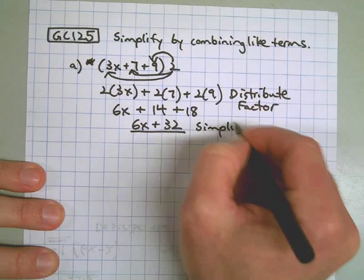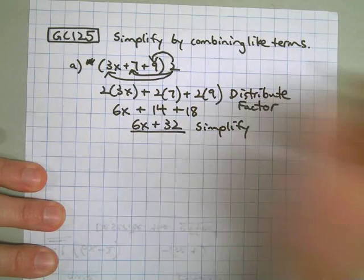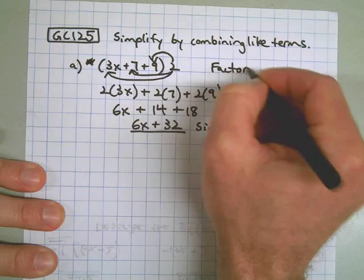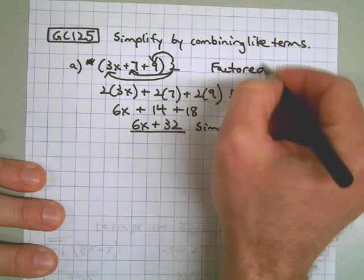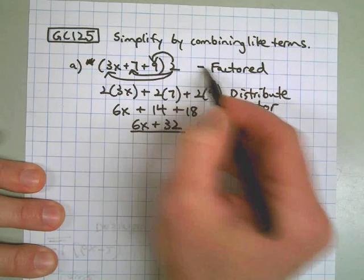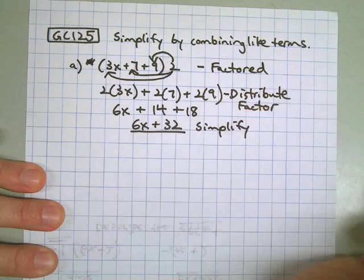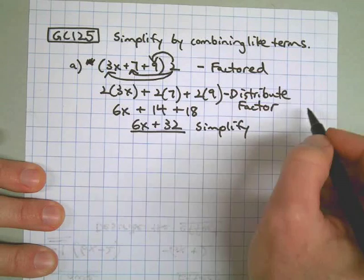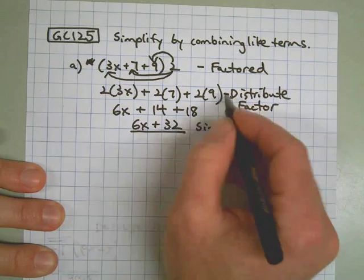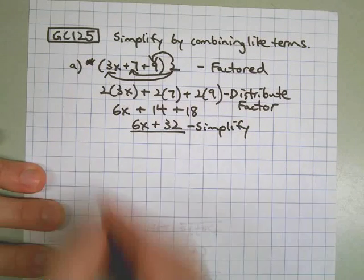So you can see by doing a problem like this we go from factored form — picture those tables we've worked on in class — factored form. We do a little bit of work and that makes it distributed. And then we do a little bit more work and that changes it to simplified.